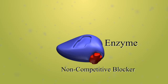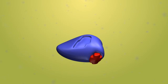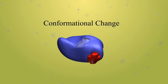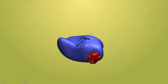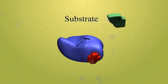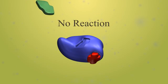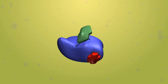Non-competitive enzyme inhibition involves the binding of a blocker to the enzyme away from the active site. This binding causes a conformational change in the enzyme, altering the shape of the active site, which prevents the substrate from binding. No reaction will occur as long as a non-competitive blocker is bound to the enzyme.